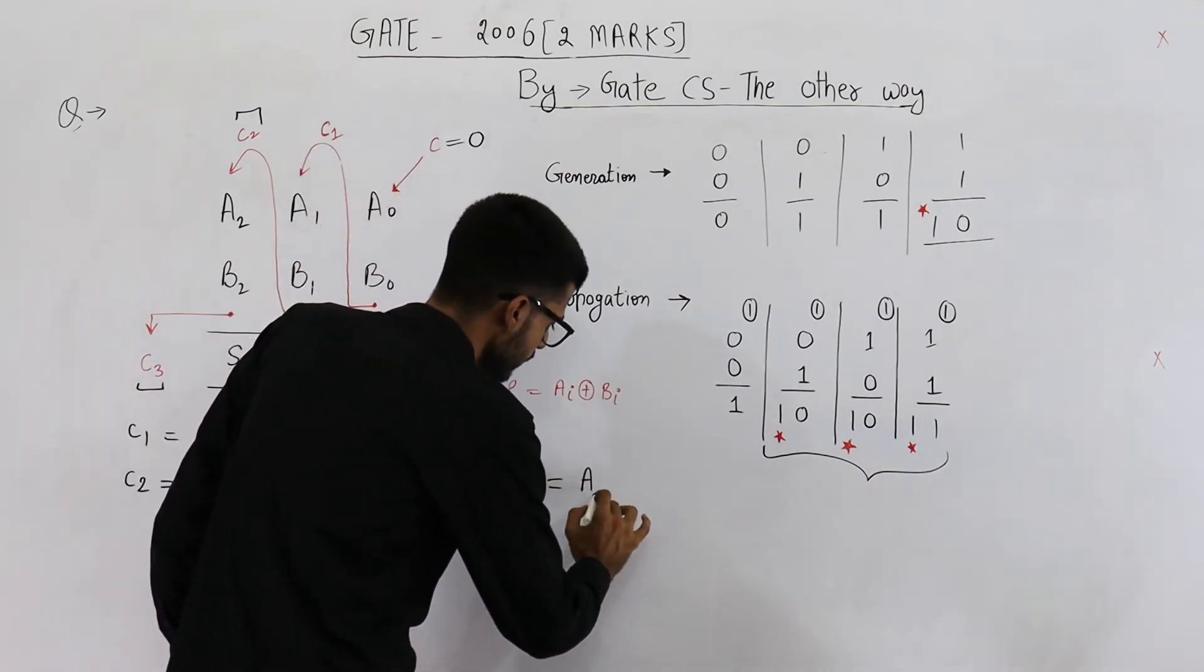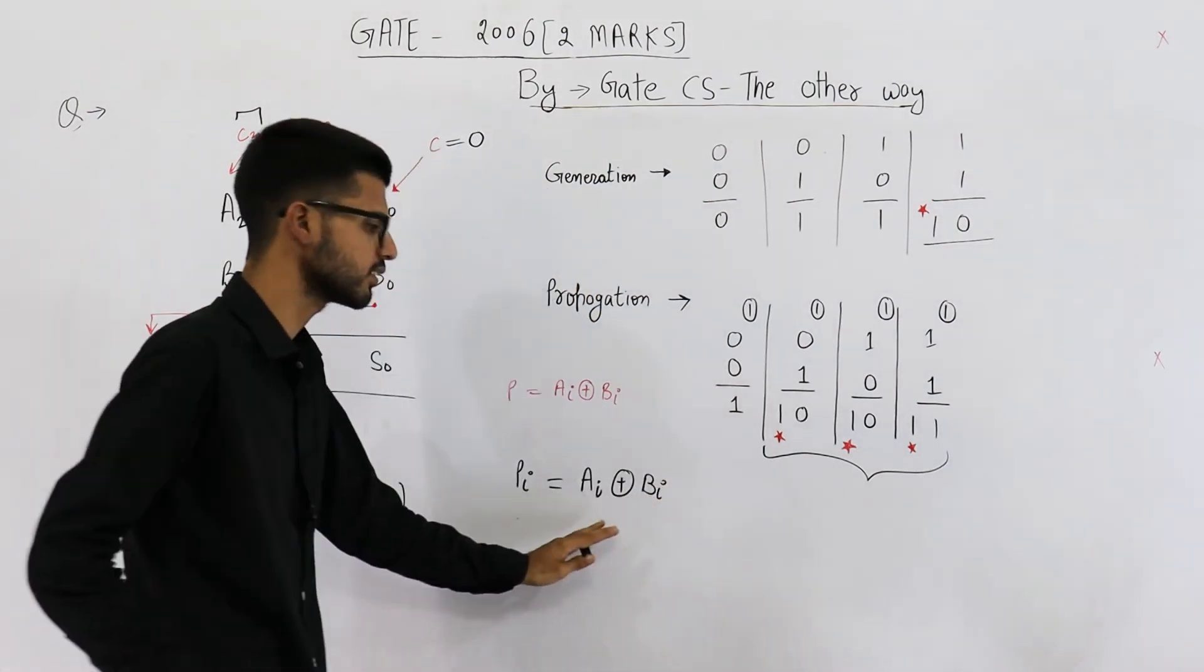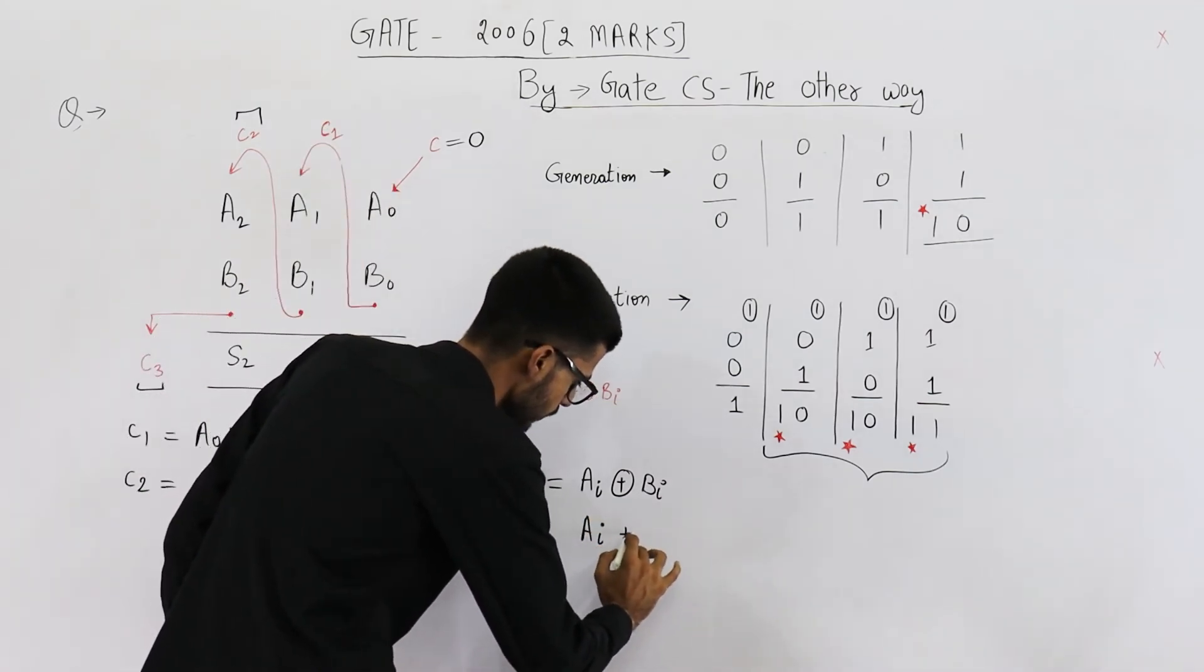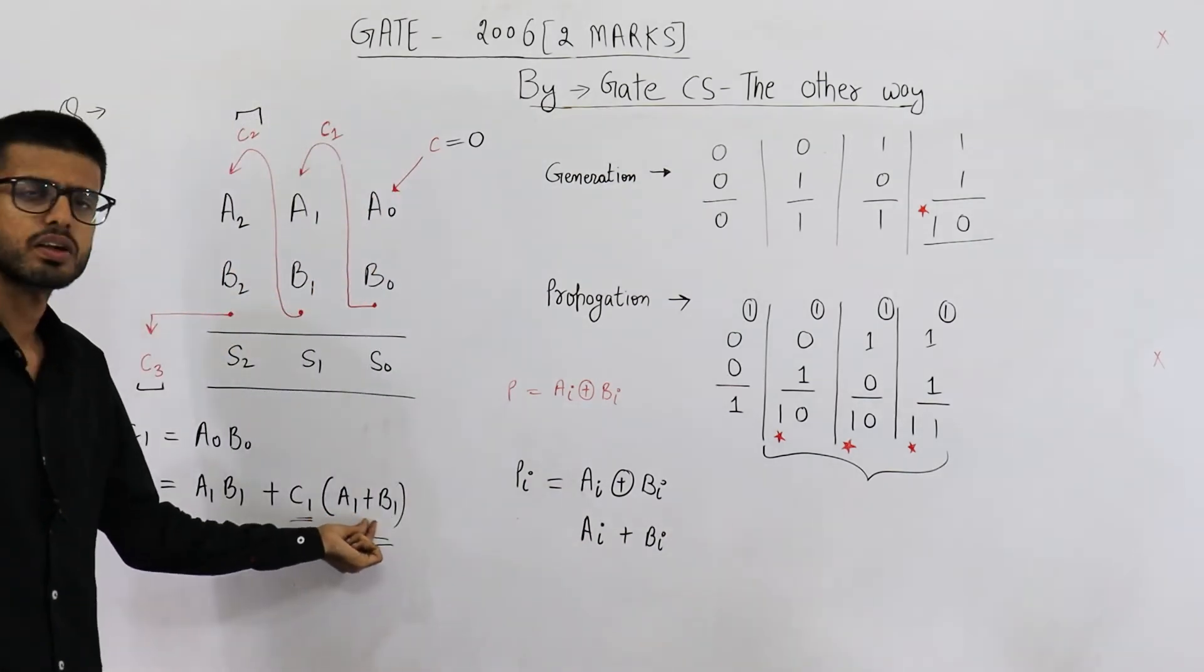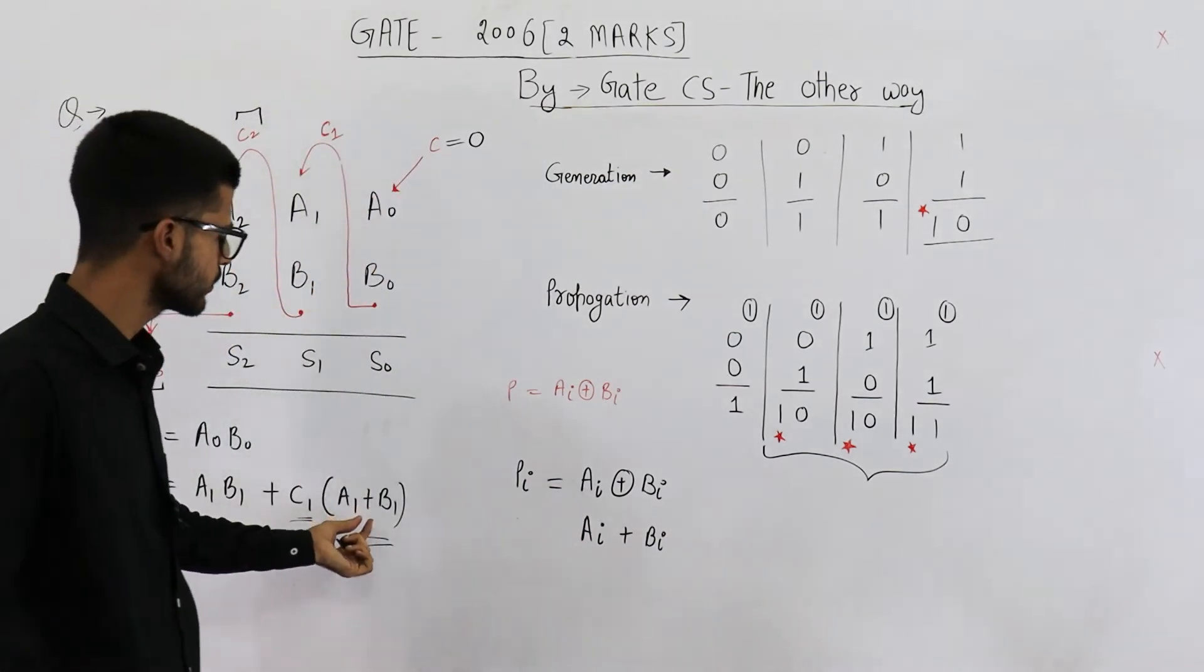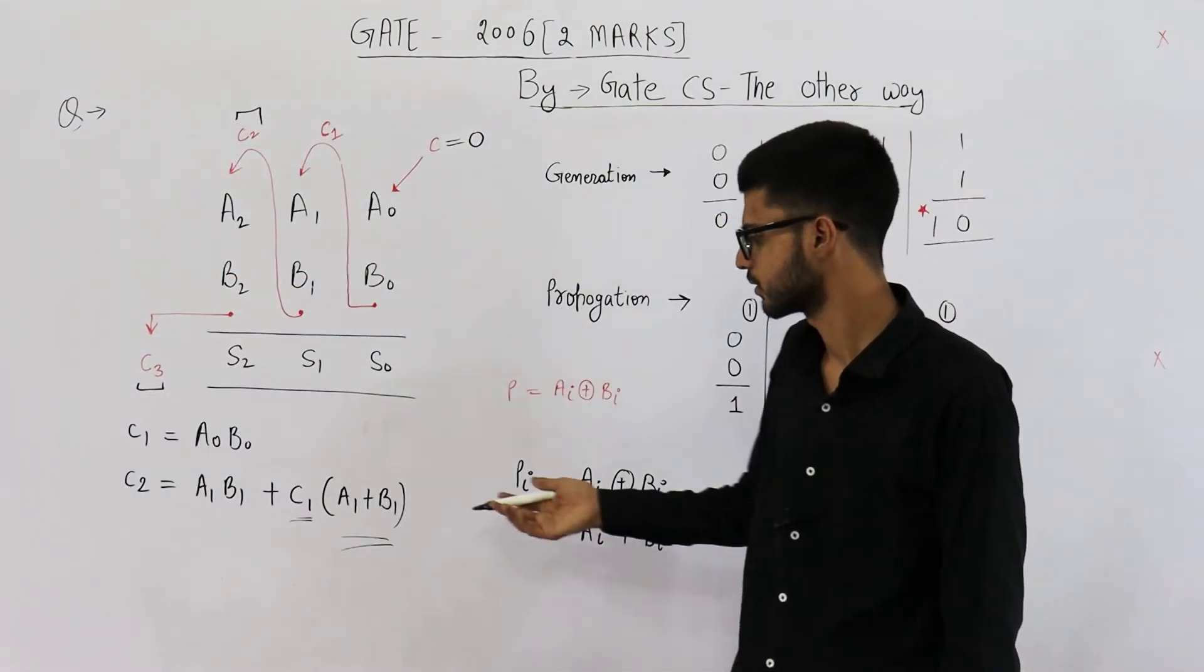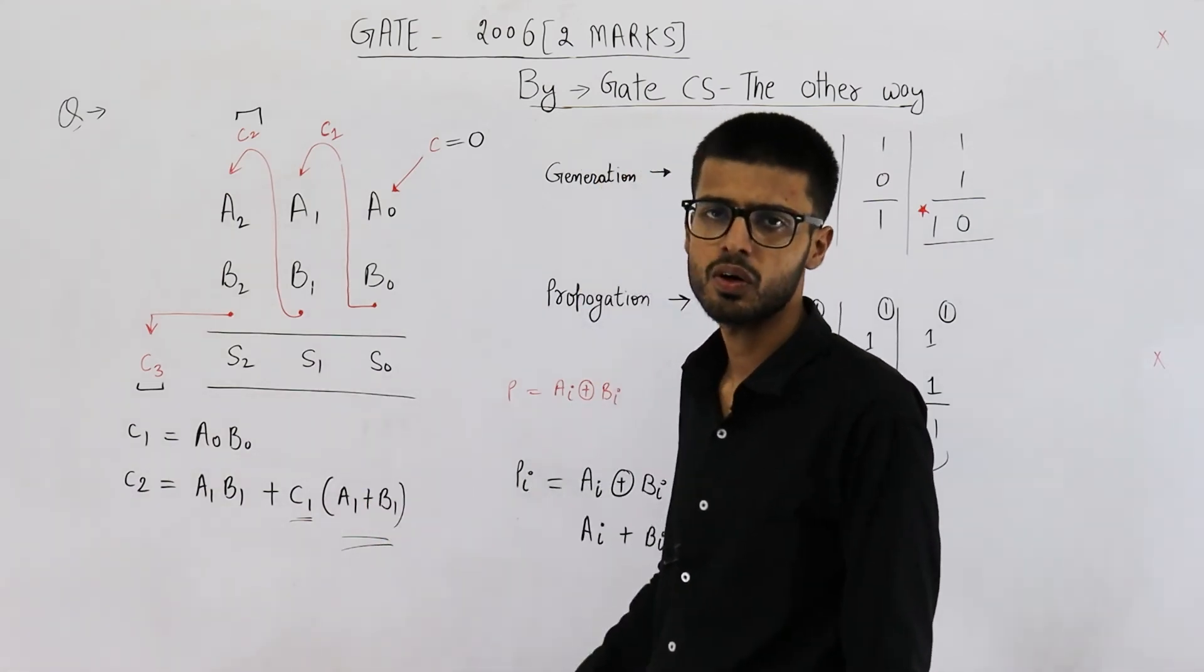Now for propagation that is commonly known as PI, you will see this equation AI XOR BI. This is also correct. AI or BI. This is also correct. Both are correct. You can use XOR here also.